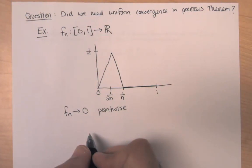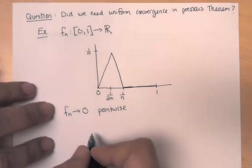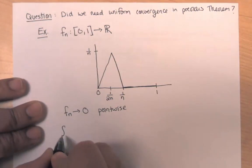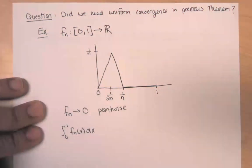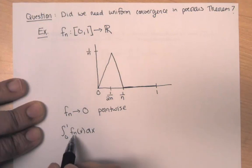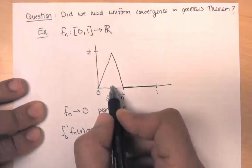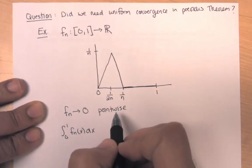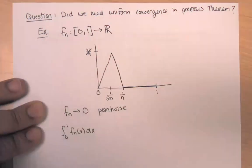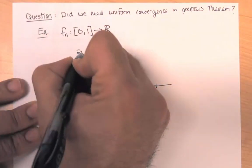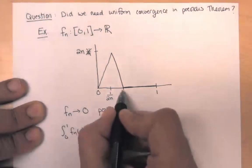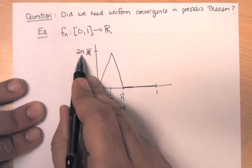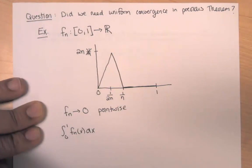We'll actually prove another way that it's pointwise by considering the integral for each n. The integral is just the area under the curve — this is just a triangle. The base has width 1/n and the height is 2n, so (1/2) · base · height = (1/2) · (1/n) · 2n = 1.